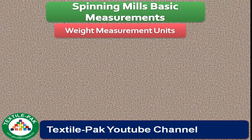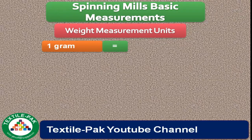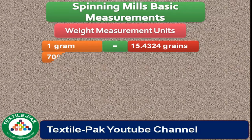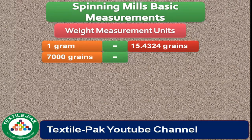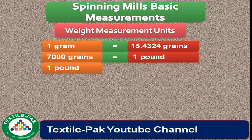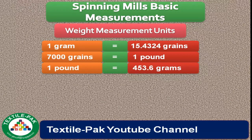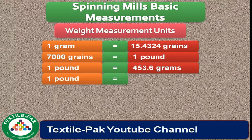Weight measurement units: 1 gram equals 15.432 grains. 7,000 grains equals 1 pound. 1 pound equals 453.6 grams. 1 pound equals 16 ounces.